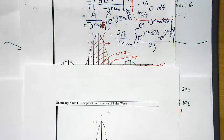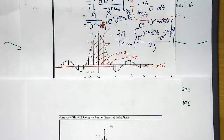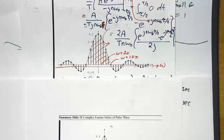Just as a comment before I get on to summary of slide 11: we should always view complex Fourier coefficients as complex numbers. That means that in general there are going to be complex values. Now, for the rectangular pulse I've given, because of its symmetry about zero, there are no sine terms, so there are actually no imaginary components.